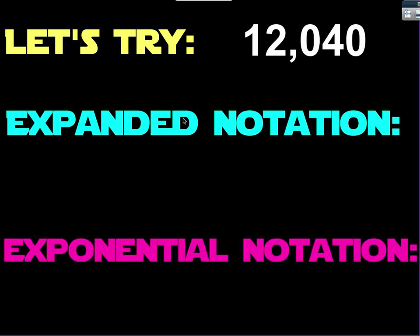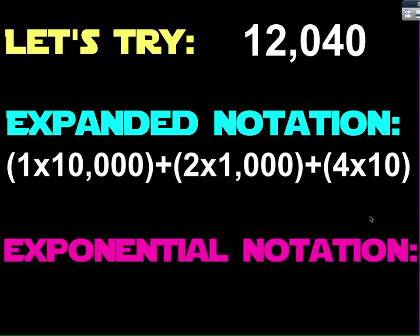The first one is expanded notation. We did this earlier, and that is where you take the digit times its place value and add those up. So we have 1 times 10,000 plus 2 times 1,000 plus 4 times 10, which would be 12,040.